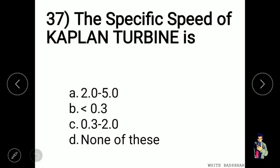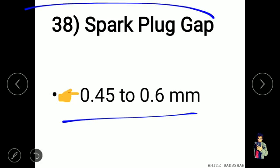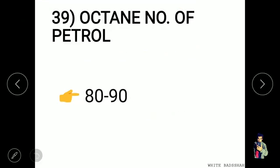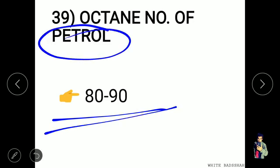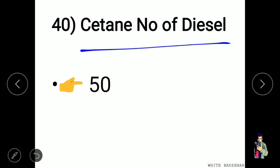The specific speed of a Kaplan turbine is 300 to 900 RPM. The spark plug gap is mainly 0.45 to 0.6 mm. The octane number of petrol is 80 to 90, while the cetane number of diesel is 50.